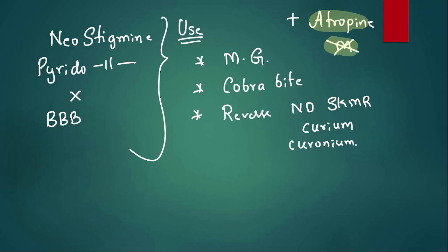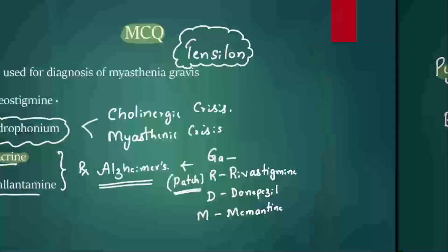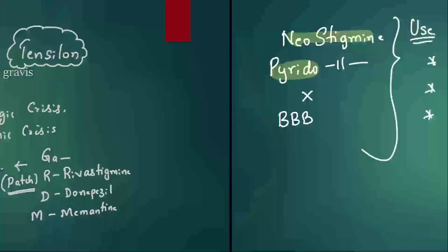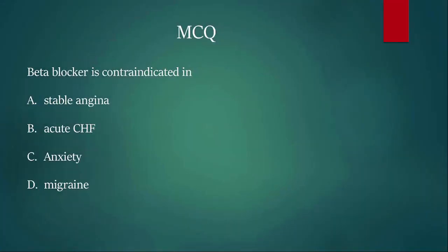The answer for MCQ 1 is edrophonium. However, if edrophonium is not available as an option, the alternative drug to diagnose myasthenic gravis is neostigmine — we can also use neostigmine, but in the exam choose the better option first.